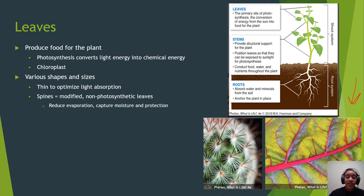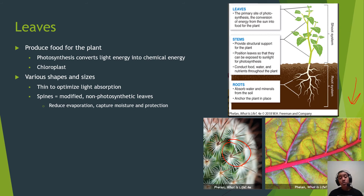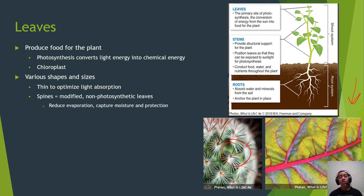There are also modified leaves. The spines of a cactus are actually modified leaves. They don't undergo photosynthesis, but they help reduce evaporation in dry, arid conditions, capture moisture at night, and protect the plant from predation.